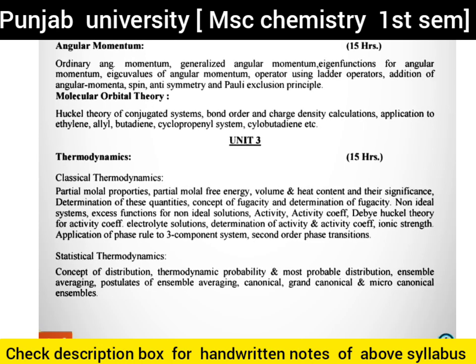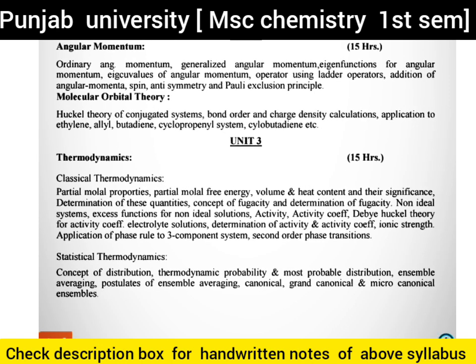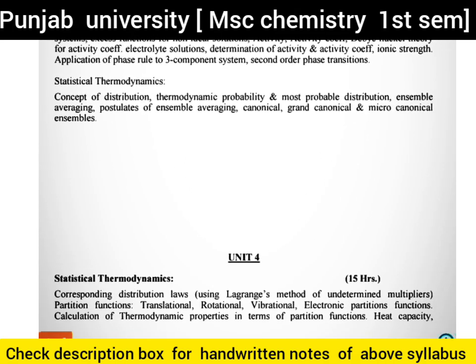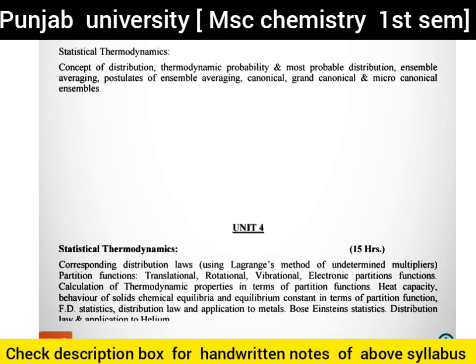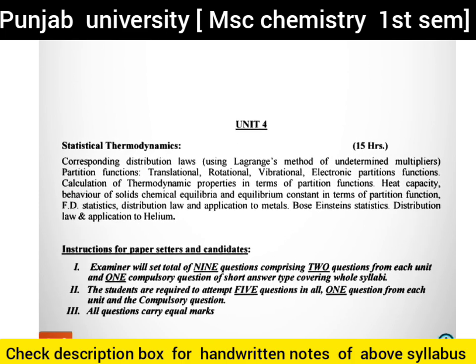For physical chemistry, Unit 1 is very important. Unit 2 covers ladder operators, Pauli exclusion principle, and Hückel theory. Thermodynamics topics include activity coefficient and partial molar properties. After that, the three-phase component rule — the question came in my exam and can come again since questions repeat every year. After that, micro-canonical and grand-canonical ensemble averages.